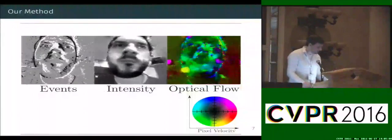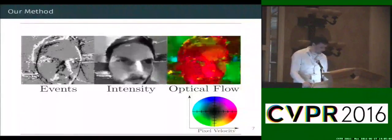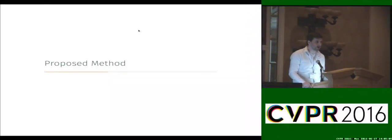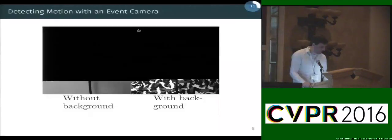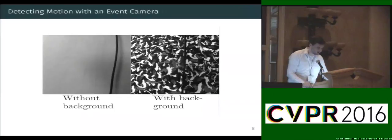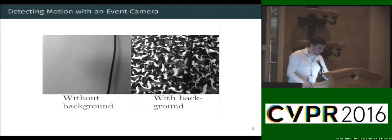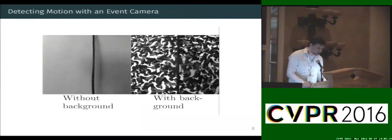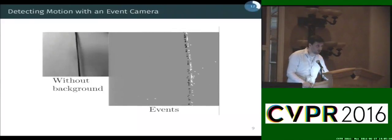But before I go into more details of our algorithm, let me give you an intuition why interpreting motion with an event camera is not that trivial. For this, we look at an example of a moving object with and without background. And if we look at the foreground, it's quite easy since the only active regions are coming from the object itself.